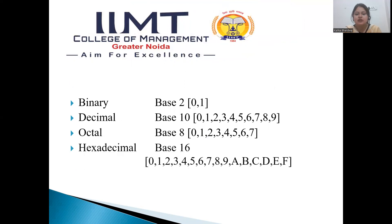As you can see here, binary has the base of 2 and the digits in it are 0 and 1. The whole number will be described in a 0 and 1 series only. Then another one is the decimal number. It has the base of 10 and the digits in it are 0 to 9. Then the next one is the octal number, which has the base of 8 and the digits here are 0 to 7.